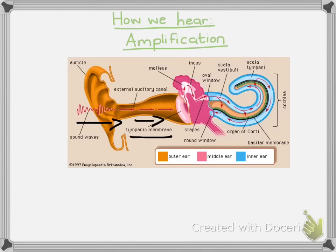The ear amplifies sound in a number of ways. Amplification begins with the tympanic membrane — it is a very large surface area, much larger than the bone that sits behind it. As the sound waves hit the tympanic membrane, it causes it to vibrate, and that vibration is transferred onto the three ossicle bones: the malleus, the incus, and the stapes.